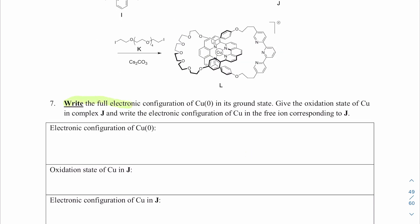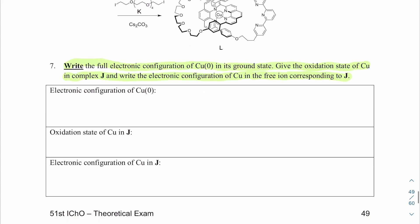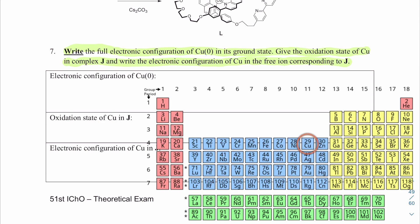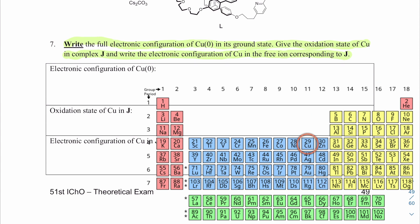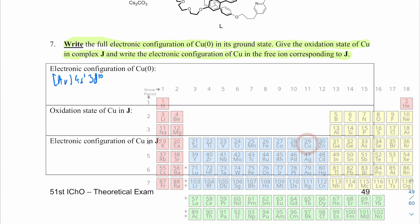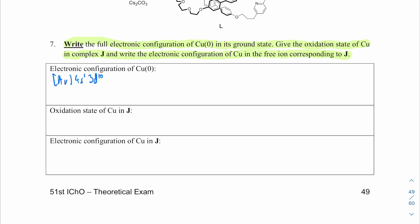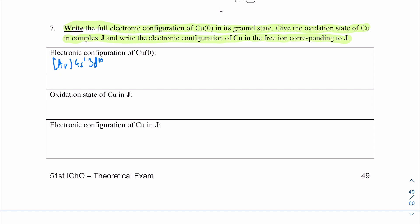Question seven: write the full electronic configuration of copper(0) in its ground state. You want to look at your periodic table. You can depict the filled shells as [Ar], then finish the open shell. The configuration is [Ar] 3d¹⁰ 4s¹, because the 3d has higher energy and it would normally be 3d⁹ 4s² but it swaps to fill the d orbital — that's a more favorable arrangement than filling the s orbital.